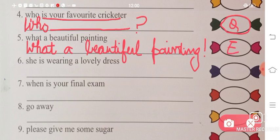'She is wearing a lovely dress.' This is a statement because you're not asking a question or making a request. The starting 'she' becomes capital. 'Is wearing a lovely dress' stays as it is. At the end, put a full stop.